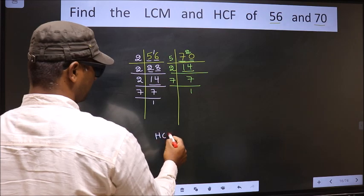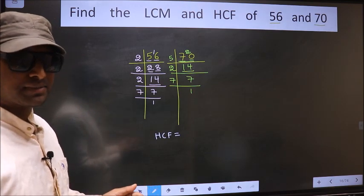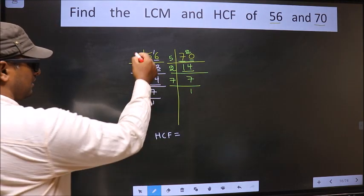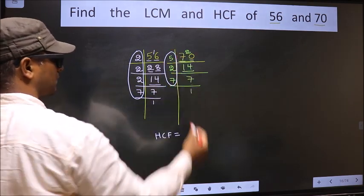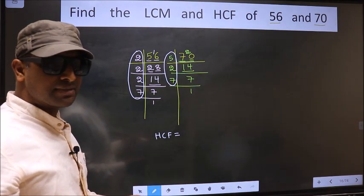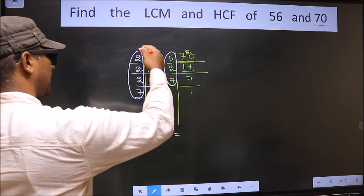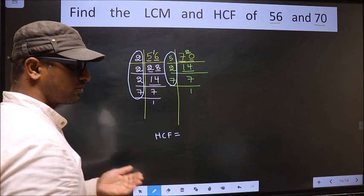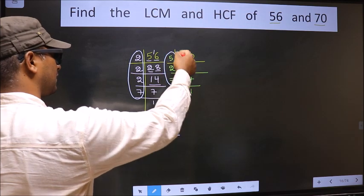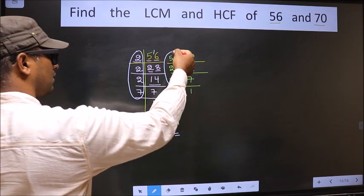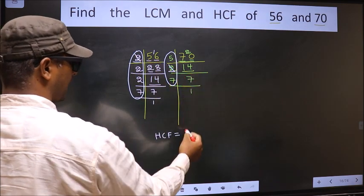So now our HCF is - HCF is the product of numbers which should be present over here and also here. I repeat, HCF is the product of numbers which should be present in these two places. So now let us find the numbers which are present here and here. Starting with the number 2. Do we have 2 here? Yes. So you cut 2 and write here.